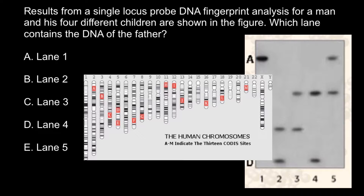Certain sites are used in this system. One chromosome has two sites and the rest have one site, and each site we call a locus. So certain loci are used in this system.